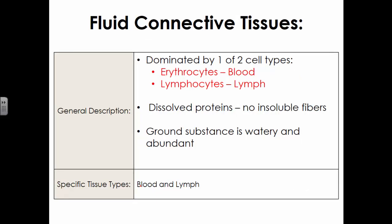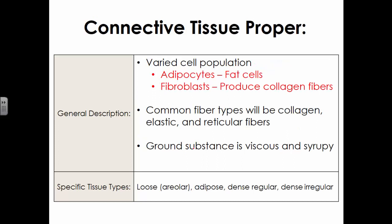Lastly, fluid connective tissues — there are just two types: blood and lymph. They will be dominated by their specific cell types: erythrocytes, more commonly called red blood cells, in blood, and lymphocytes in lymph. Blood is not stringy at all, so the fiber presence here is dissolved protein — under normal conditions there are no insoluble fibers present in these fluids. The ground substance is very abundant and watery, which allows for transport. We'll be going through each of these types in detail, looking at what they'd look like under the microscope, and you'll get plenty of time to practice identifying them.